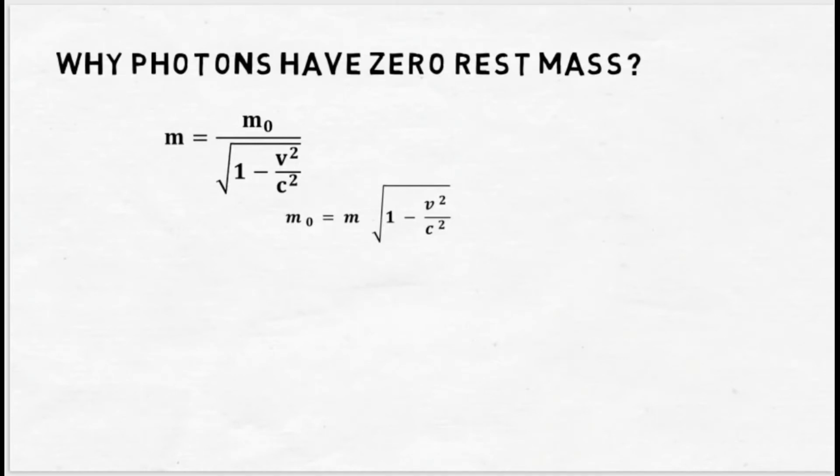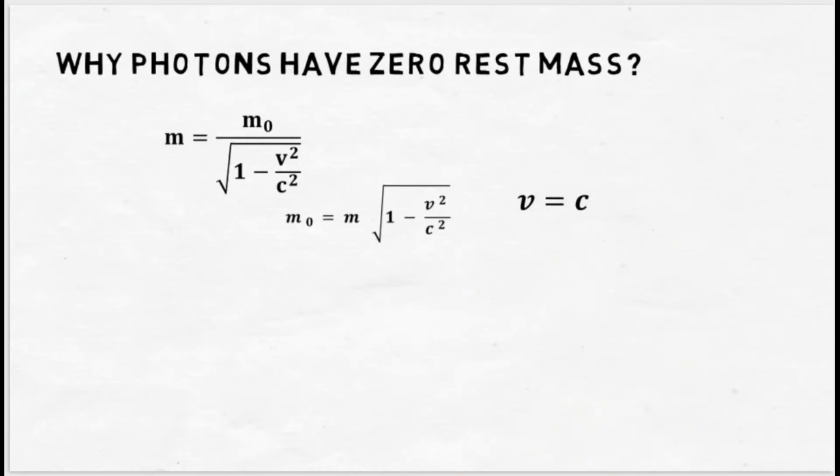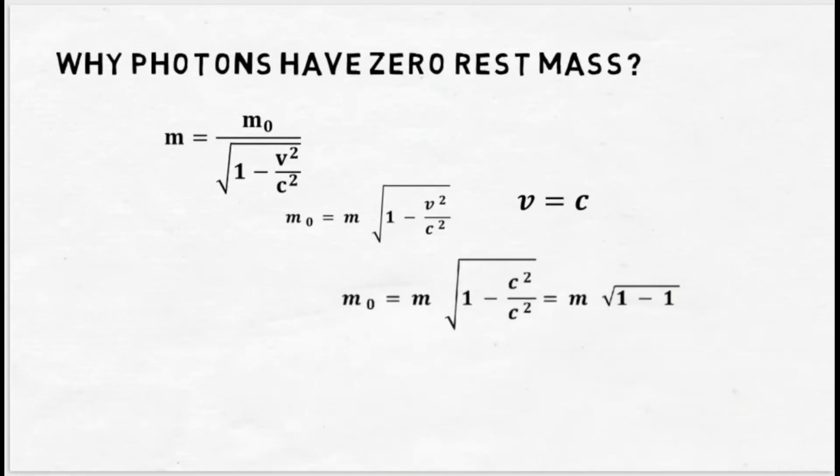Using this equation, we will determine the rest mass of photon. We know that photons always travel with the velocity of light. So in this equation, we can put the value for v is equal to c.